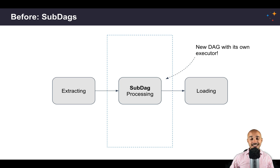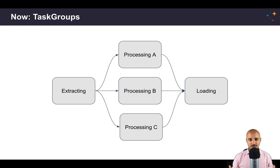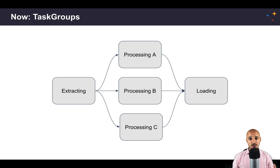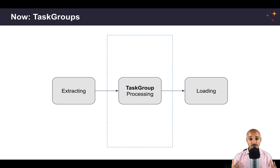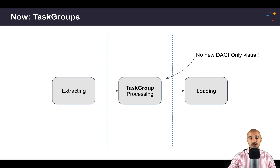In Airflow 2.0, there is a new concept of task groups. With task groups you are able to group your tasks together but only visually — no more deadlocks, no need to create a new DAG, no need to think about which executor to use. You just create the task group in the DAG, attach tasks processing A, B, and C to that group, and you end up with the corresponding task group. It's exactly like sub DAGs without all the drawbacks.